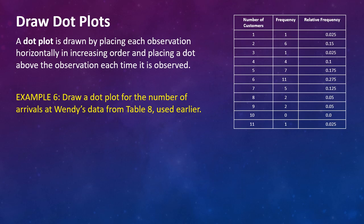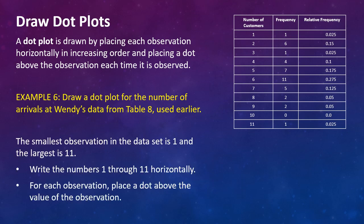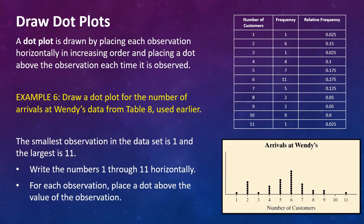Draw a dot plot for the number of arrivals at Wendy's from the data from table eight that we used earlier. And there's the table right there. So what you're going to be doing is you're going to put the number of customers horizontally one through 11. The smallest observation number is one. The greatest was 11. You're going to put those on a horizontal line. And then for each occurrence, you're going to place a dot. So next above one, you're going to have one dot above two. You're going to have six dots. And so here's the table. And so what this does, it gives you a simple representation of the bar graph and a really quick kind of a summary of the data visually. So you can start making inferences and it might actually help you figure out other versions of graphs or tables that you'd like to use.